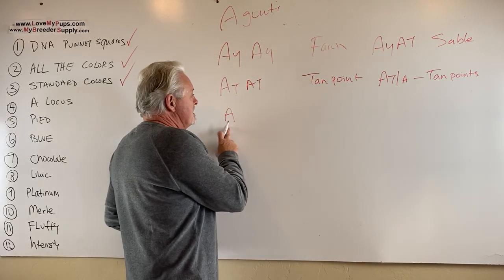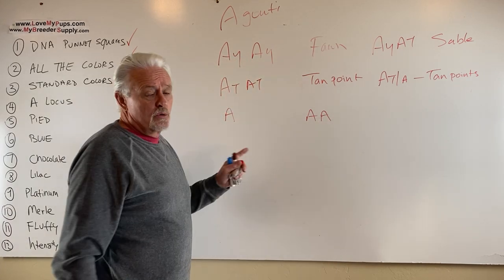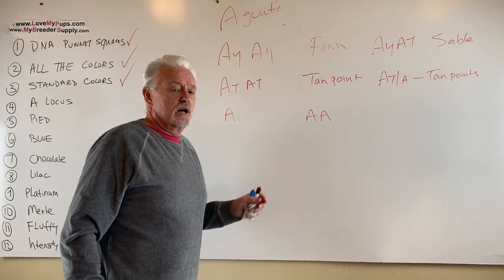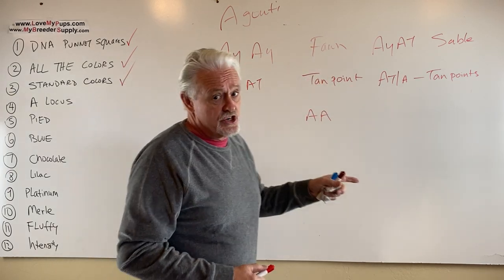Then the A gene, the only way you get the A gene expressed is if you get a dog that's AA, which makes for a double recessive solid coat color. So all of these now are controlled by some other genes.